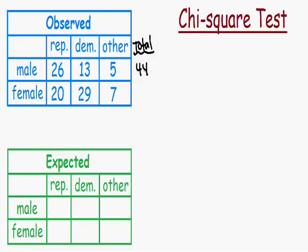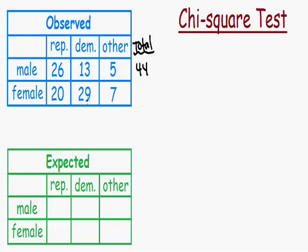Now let's do the same thing for females. We have 20 female Republicans, 29 female Democrats, and 7 other females. 20 plus 29 is 49, and 49 plus 7 is equal to 56. So we have 56 total females. And if we add the males and females together, 44 plus 56 is equal to 100 total people observed in the study.